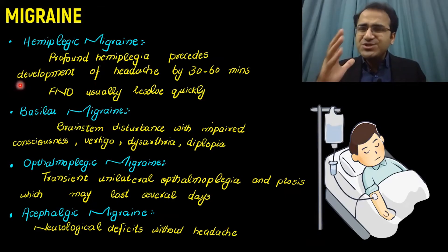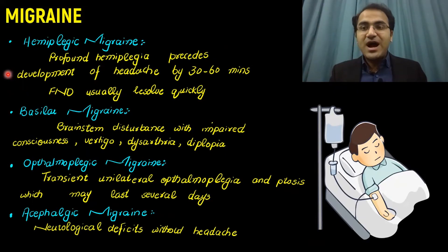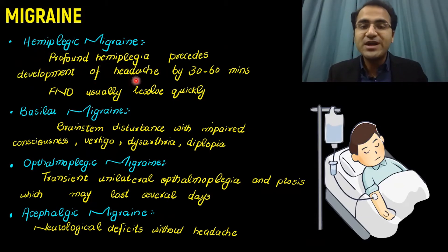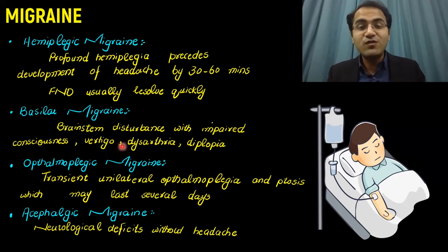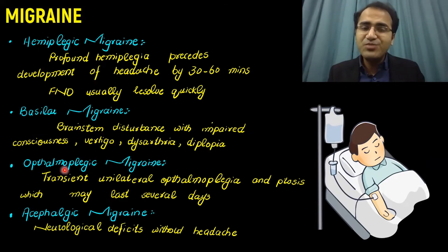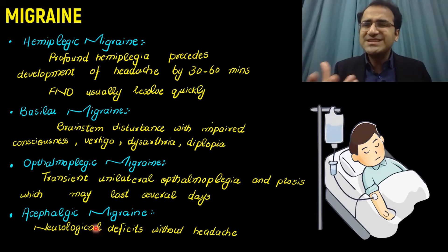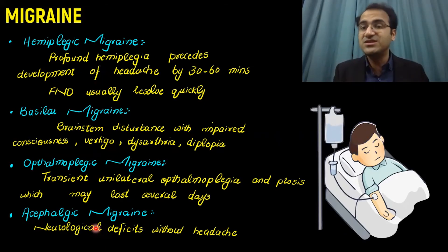There are certain types of migraine you need to know. Hemiplegic migraine: profound hemiplegia precedes the development of headache — there is weakness on one side of the body, which precedes the headache and is fully reversible. Basilar migraine involves the brainstem with impaired consciousness, dysarthria, or diplopia. Ophthalmoplegic migraine involves the eyes with transient unilateral ophthalmoplegia with ptosis. These are presentations of migraine that can present to you in the emergency department.